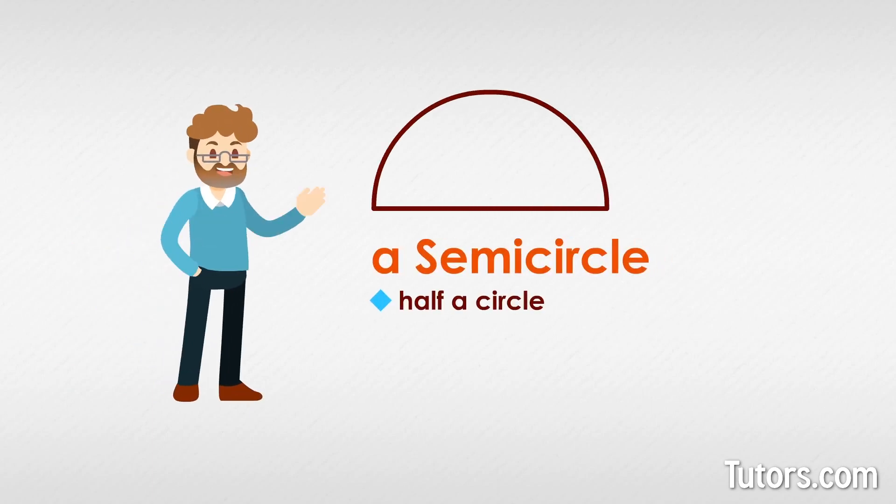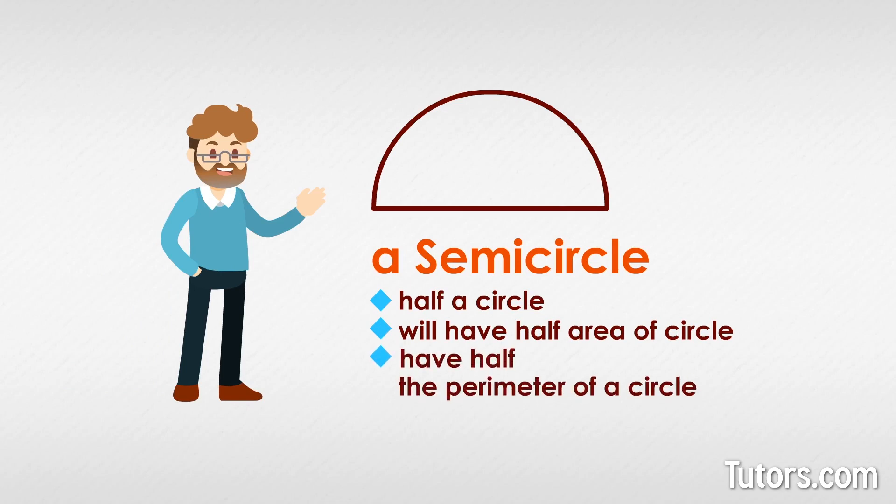A semicircle is half a circle. That means it will have half the area of a circle. You might think that it means it will have half the perimeter of a circle, but that is not true. Let's find out more about semicircles by first reviewing circles.